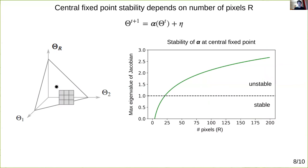And the result is that the central fixed point stability depends on the number of pixels r. If you plot this maximum eigenvalue versus r, you see that it starts out less than 1, hence stable, but soon crosses 1 and becomes unstable. There is a transition point where the dynamics change from stabilizing the uniform gray image to destabilizing it.